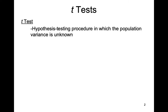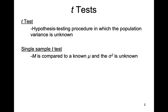We've now learned two different types of t-tests and this will be our third. In general, a t-test is a hypothesis testing procedure in which the population variance is unknown. We've previously learned that we can do a single sample t-test, where we take a mean from our sample and compare that to a known population mean mu, or some other logical comparison value, when sigma squared is unknown.